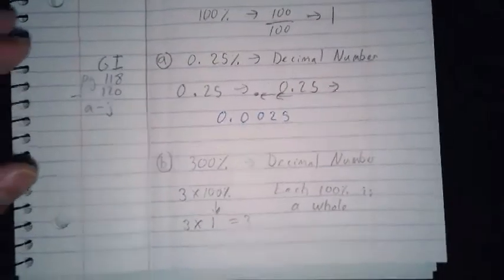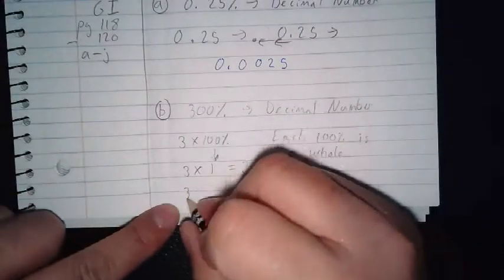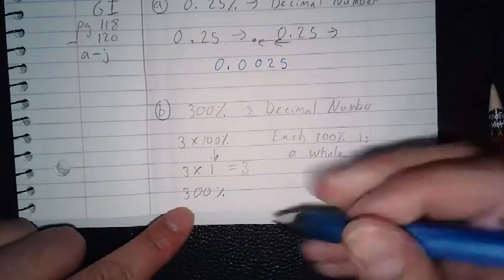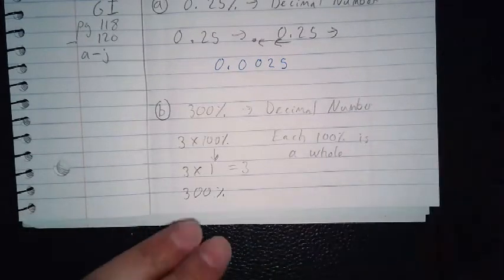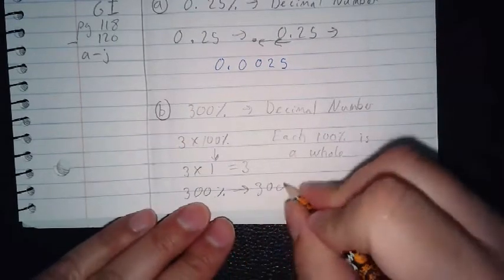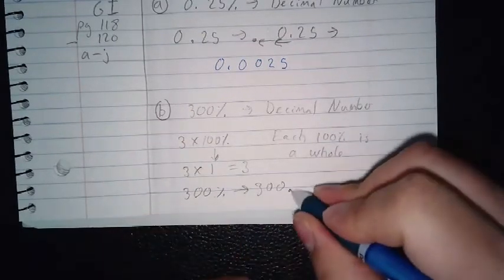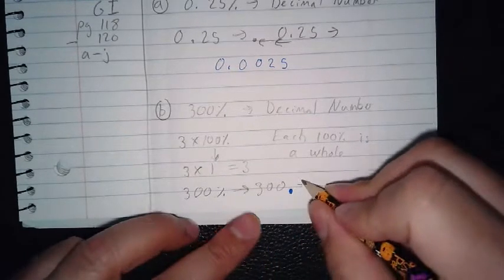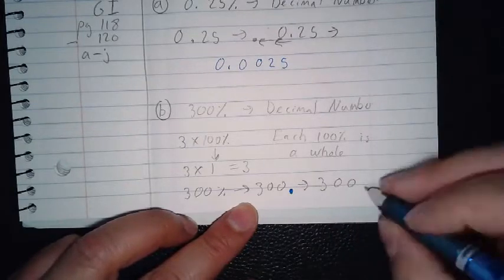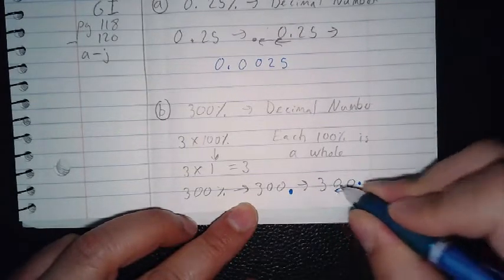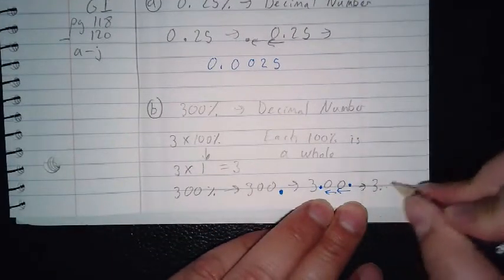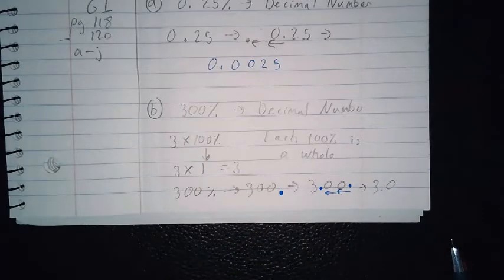Let me show you the other way as well. Three hundred percent: remove the percentage sign and add the decimal point. Move the decimal point two spots to the left — one, two — and you're left with three point zero, which is the same thing.